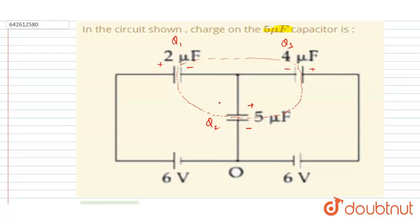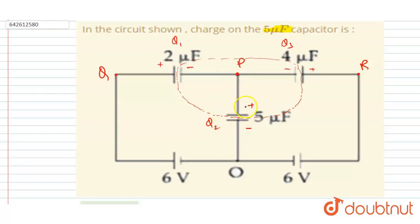Now we can go into the loops. Let's say this point is O, this point is P, this point is Q, and this point is R. If I go from O to P to Q and then back to O, the potential difference across this 5 microfarad capacitor is q2 by 5.